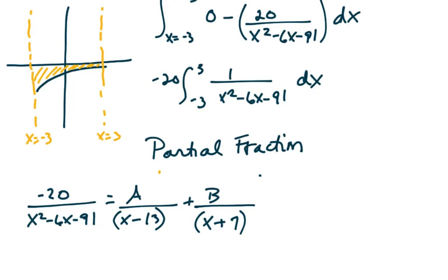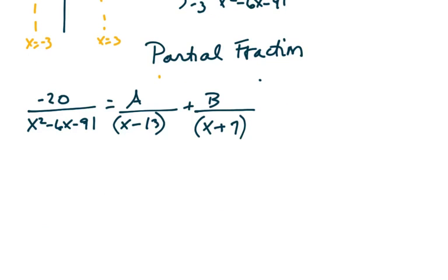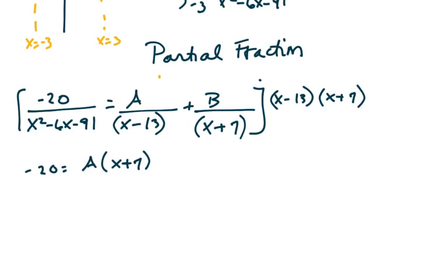Let's continue this partial fraction decomposition and multiply the entire equation by the denominator factor. You're left with minus 20 equals a times x plus 7 and b times the quantity x minus 13.